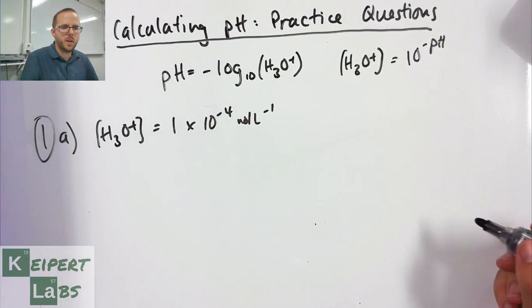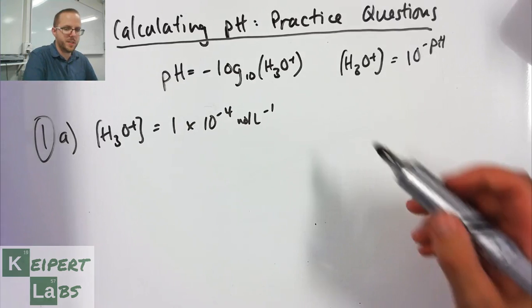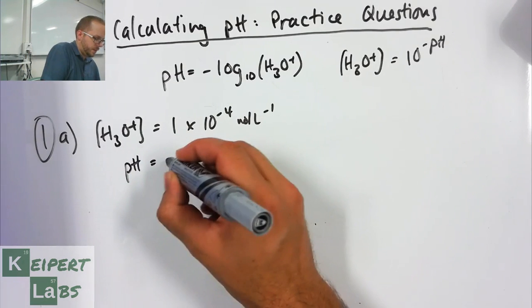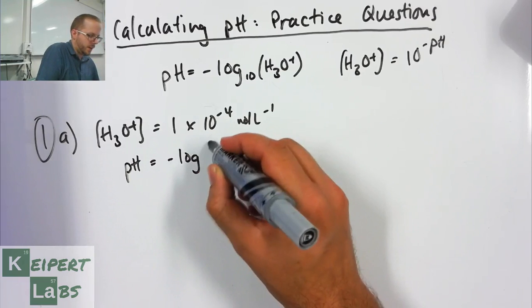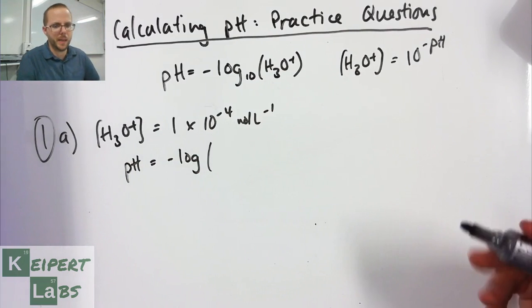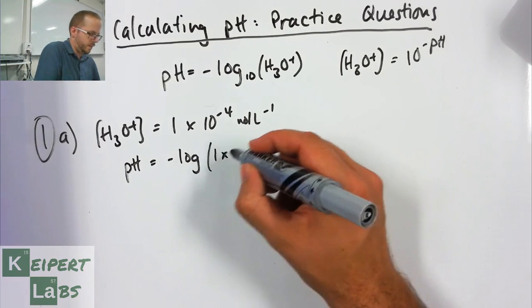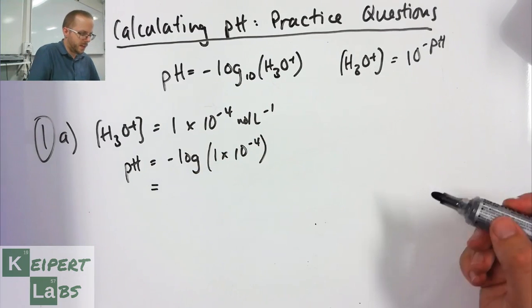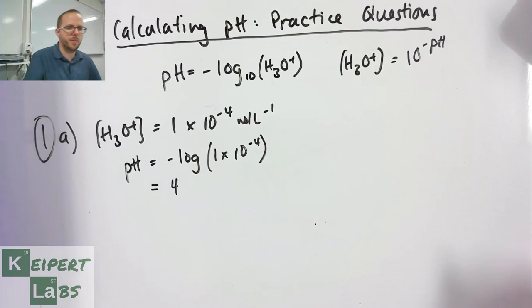So we're going to substitute into this formula here. pH equals minus log - now I'm not going to write the base 10 each time but it's going to be the same in each situation. So if I put that into my calculator then I get a pH of 4.